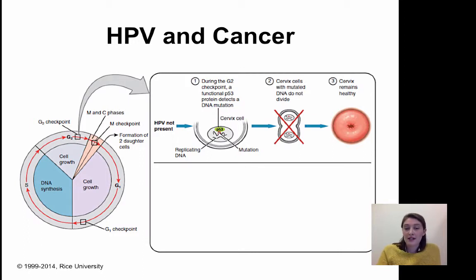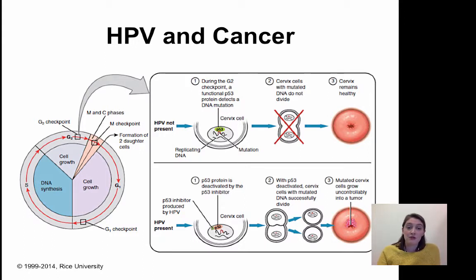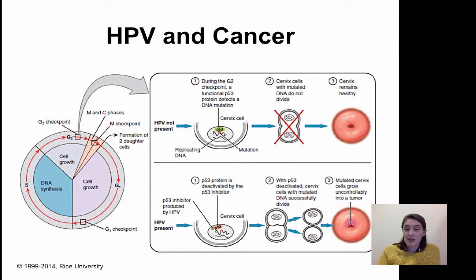There is a particular protein called P53, known as a tumor suppressor protein, because when P53 is functioning regularly it is able to detect DNA damage and halt the cell cycle. P53 recognizes breaks in the DNA and initiates a cascade of events that stops cell division, so those mutated cells no longer grow and divide and the cervix remains healthy. However, when HPV is present, it produces a particular protein that is an inhibitor of P53. With P53 inhibited, the cell thinks everything is okay, proceeds to M phase, and these mutant cells start to grow uncontrollably, resulting in abnormal cell growth.